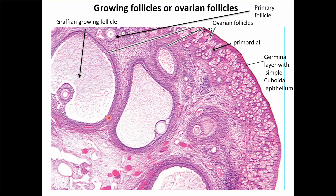The Graafian follicle — there will be only one Graafian follicle, in which the oocyte is pushed to the periphery. It has corona radiata around it and this attachment is called cumulus oophorus. It has a large antrum.